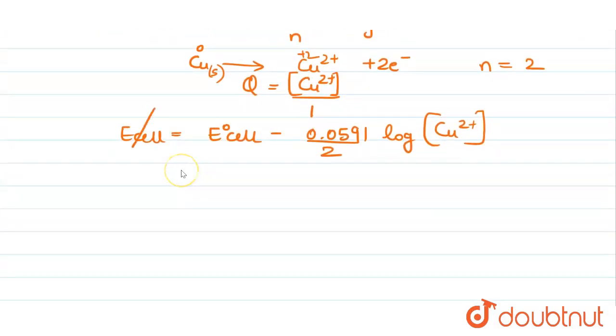As per the question we have been asked to find concentration of Cu2+ when electrode potential will be 0. So minus E⁰ cell equals minus 0.0591 upon 2 log of Cu2+. Over here the base is 10.